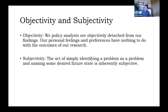I want to take a brief moment to talk about objectivity and subjectivity — competing forces in our analysis. First, objectivity: we are scientists, and our analysis should be objective. Our personal feelings and preferences have nothing to do with the outcomes of our research. We may strongly feel that one solution is right, but our feelings have nothing to do with it — we make recommendations based on data. Subjectivity involves questions of what should be, what ought to be. The act of identifying a problem and calling it a problem is inherently subjective. So while we aim for objectivity in our research, we have to admit the pursuit itself is subjective.